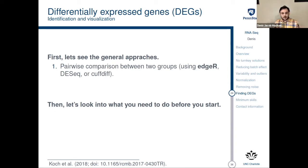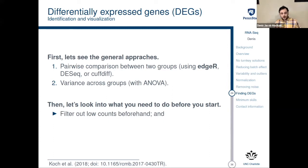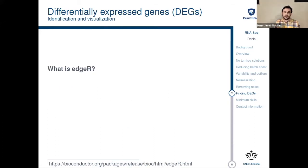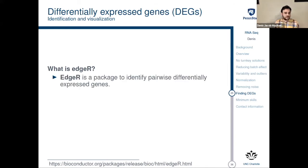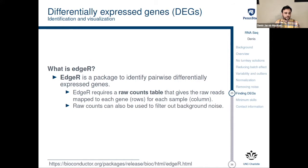The first thing you normally do is a pairwise comparison between two groups, using different programs — for example, edgeR, DESeq, and CuffDiff. We are going to look specifically at edgeR as an example today. You can also use ANOVA or other similar tests to infer variance across groups, and once you do that, you again filter out low counts and check and adjust the filtering cutoffs. edgeR is a package used to identify pairwise differentially expressed genes; it requires something called the raw counts table — basically raw reads mapped to each gene for each sample — and the raw counts can also be used to filter out background noise.